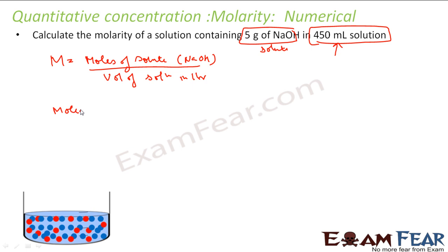So for moles of solute, what do we have to find? First let me find moles of NaOH. Nothing but mass divided by molar mass. This formula we have just seen. So what is the mass of sodium hydroxide? 5g. What is the molar mass of sodium hydroxide? Let's find this.